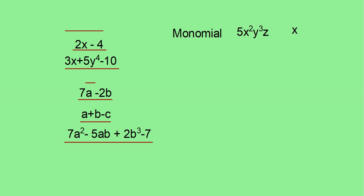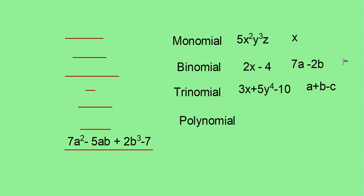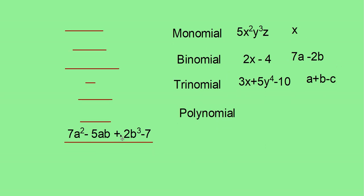Now, if you have 2 terms in an expression, that we can call it as binomial. Then, can you say, what are the binomials here? 2x minus 4 is a binomial. 7a minus 2b is again a binomial. Now, if 3 terms are there, it is called trinomial. Now, what are the trinomials here? Here, 3x plus 5y raise to 4 minus 10 and a plus b minus c. Now, the terms which are more than 3 are in common. All these expressions we can call it as polynomial. Here, all these terms we can call it as polynomials. And in this, not monomial, binomial and trinomial.